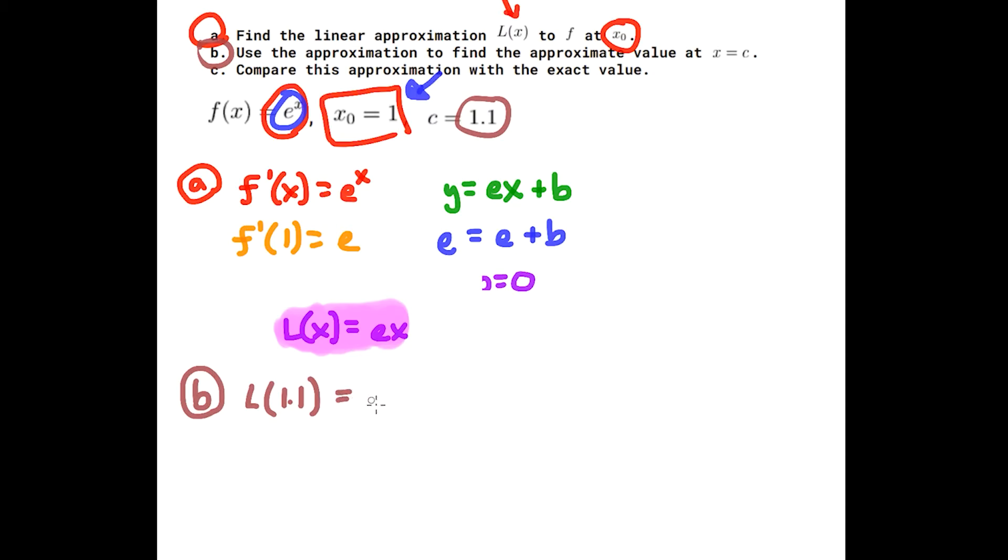So this would just be e times 1.1, which if you have the decimal approximation, it ends up being 2.990110011. Okay, so if you round this to three decimal places it's going to be 2.990. And I should say this right here is an approximation too, but I'm just rounding it to three decimal places.